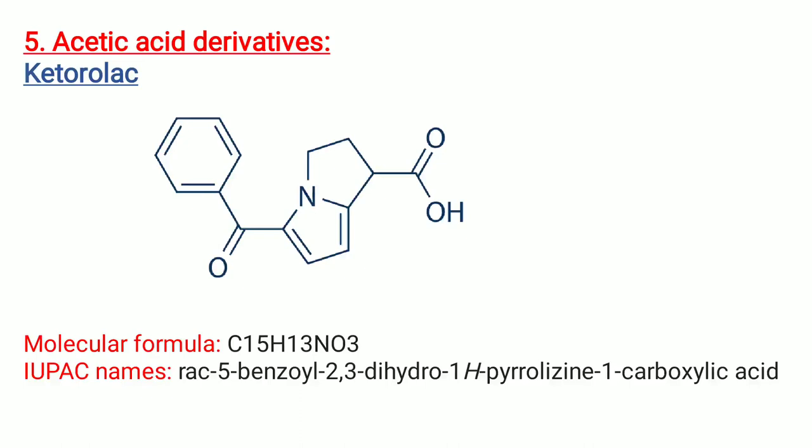Fifth is acetic acid derivatives — example is ketorolac. Its molecular formula is C15H13NO3. IUPAC name is (±)-5-benzoyl-2,3-dihydro-1H-pyrrolizine-1-carboxylic acid.